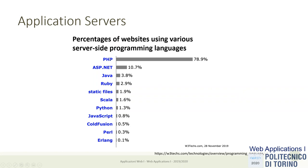Speaking of application servers, there are statistics showing that most pages today are still written in PHP, a language invented specifically for developing web pages. Facebook runs PHP; WordPress, Drupal, and Joomla websites all run PHP. There are a lot of content management systems that use PHP, hence its popularity. This reflects the number of websites using this language, not the number of users or traffic. Then there are Microsoft .NET technologies, Java, and other languages used as application server platforms.